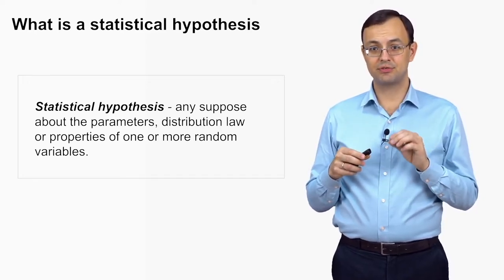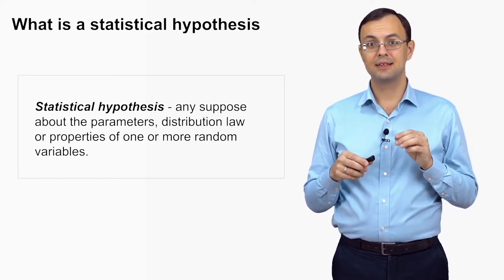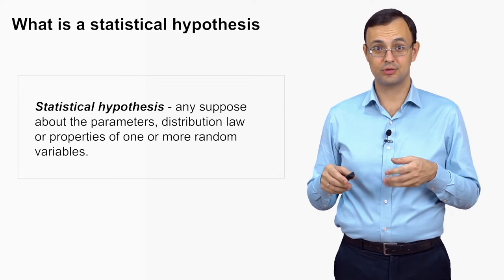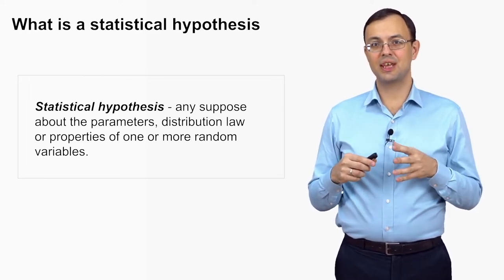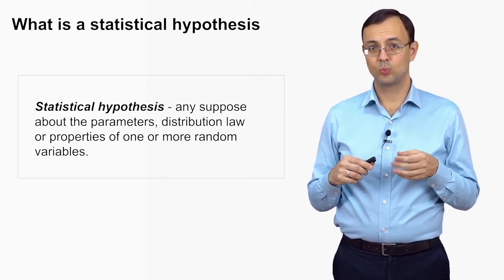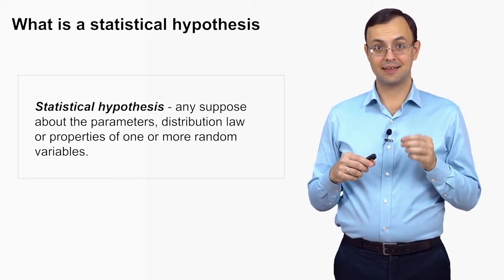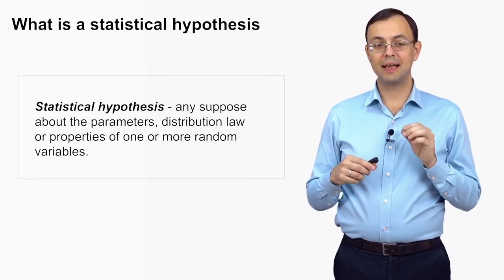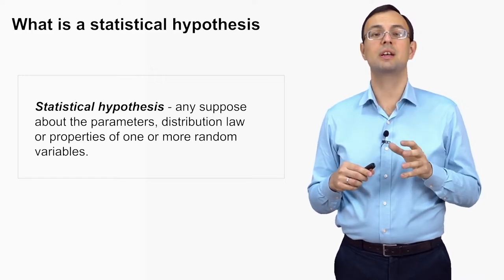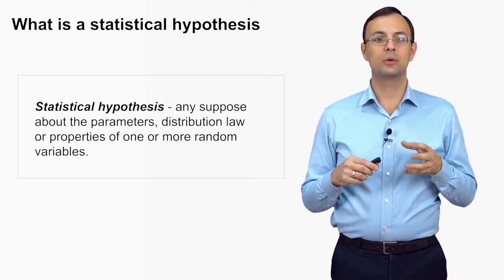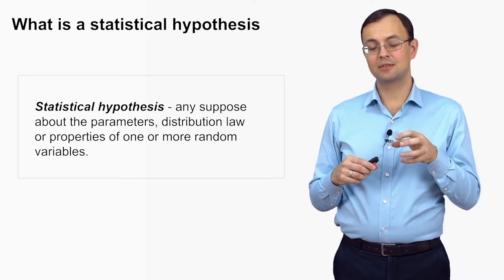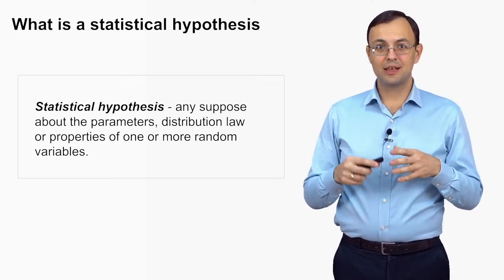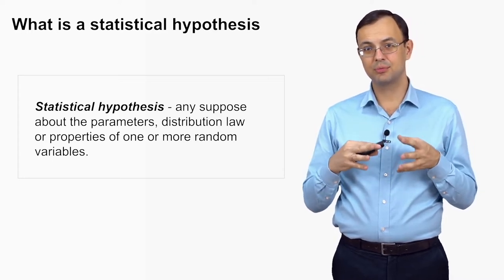If the coin is fair, then p equals one half. So instead of saying we want to test the hypothesis that the coin is fair, we say: we want to test the hypothesis that random variable X — the number of heads in 100 flippings — follows a binomial distribution with parameters 100 and one half. That is how we translate a hypothesis from human language into mathematical language.